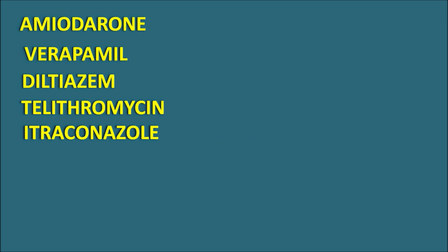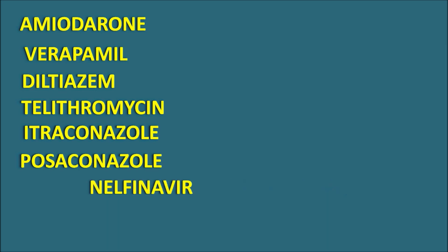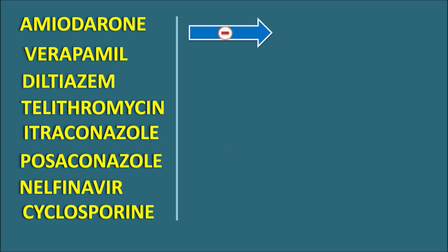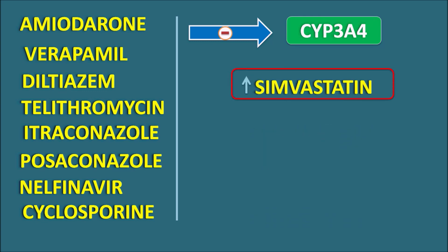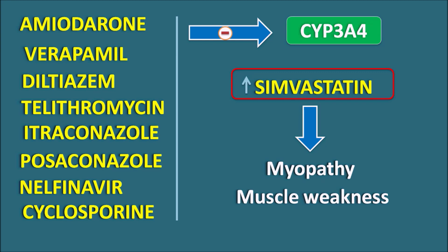Not only amiodarone — there are many other drugs that interact with simvastatin metabolism. Drugs like verapamil and diltiazem, both calcium channel blockers, as well as telithromycin, a macrolide antibiotic, and azole antifungals like itraconazole and posaconazole, and protease inhibitors like nelfinavir, and immunosuppressants like cyclosporine — all these drugs are potent inhibitors of the CYP3A4 enzyme. Thereby they inhibit the metabolism of simvastatin, increasing its plasma levels and producing muscle-related disorders like myopathy, muscle pain, muscle weakness, and even rhabdomyolysis, which is the dissolution and breakdown of muscle fibers.